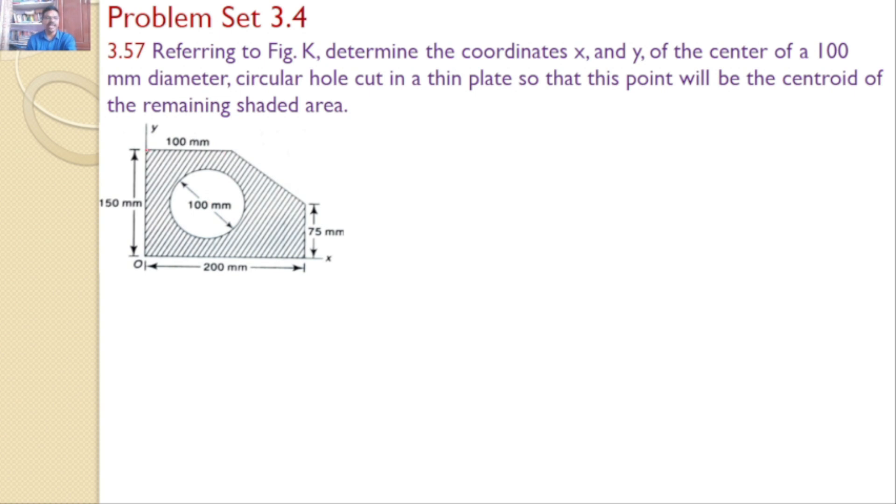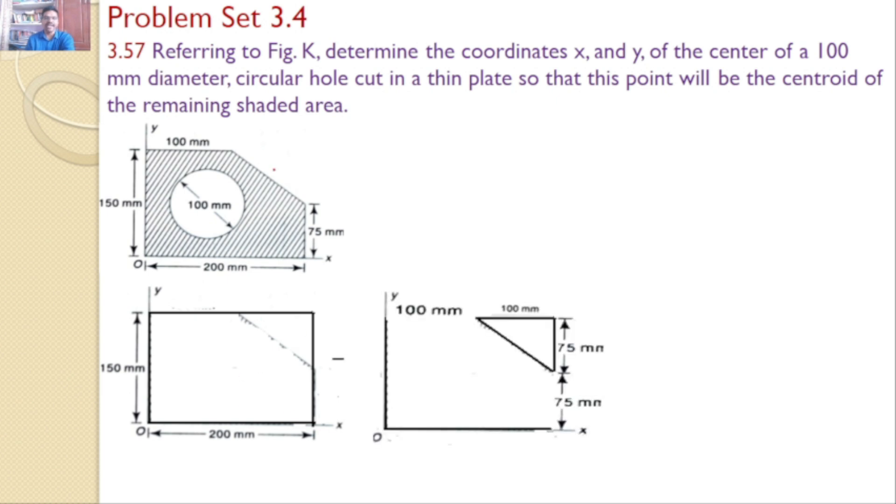I will consider total three areas here. The first area is total rectangle, second area is triangle, and third area is circle. Now I would like to see that the centroid of this circle is the centroid for the total area. That means this is the first area minus the triangle.